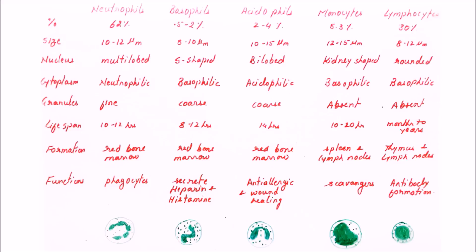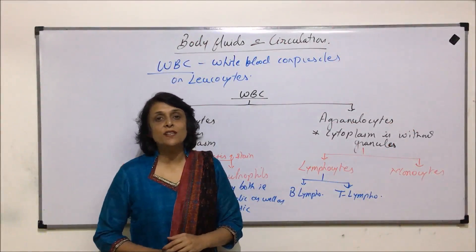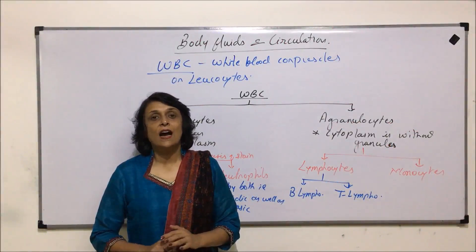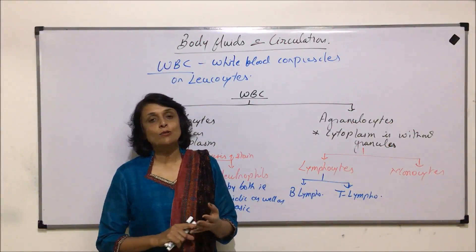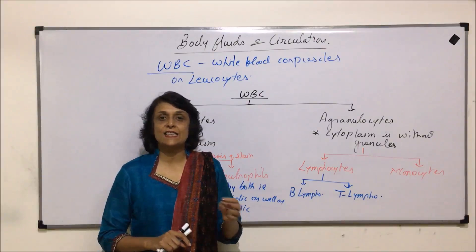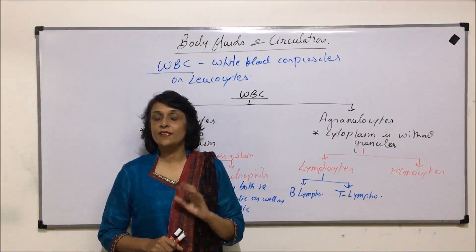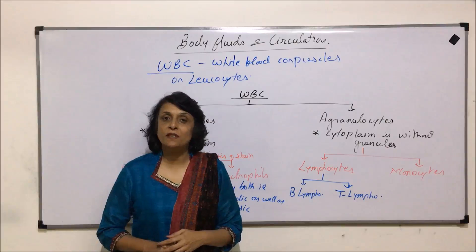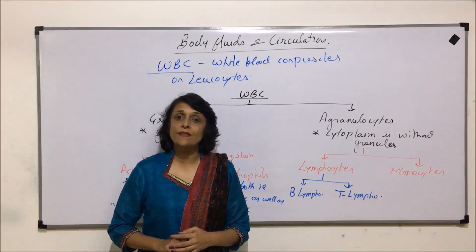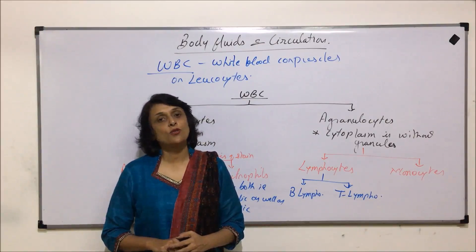When we compare these cells in a tabular form, we are able to have a clear idea of their percentage, shape, sizes, lifespan, and functions at a glance. From this table, we have understood how they vary in their lifespan, sizes, nuclear shapes, as well as their functions. With this, we have completed the second type of corpuscle—that is, WBC—and in the next segment, we will start with the third: platelets or thrombocytes.